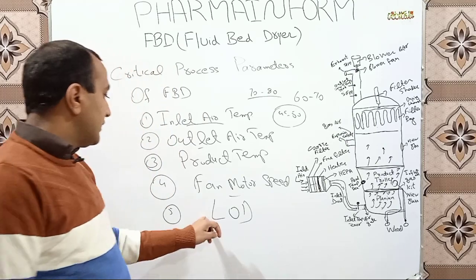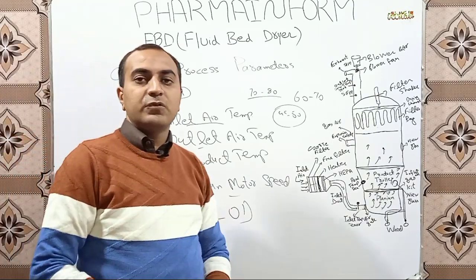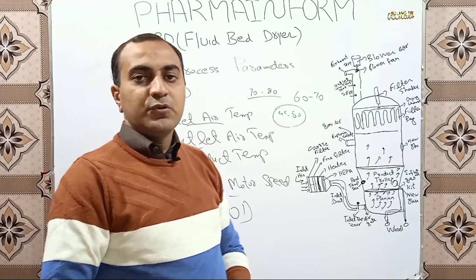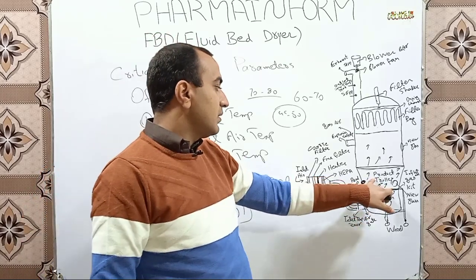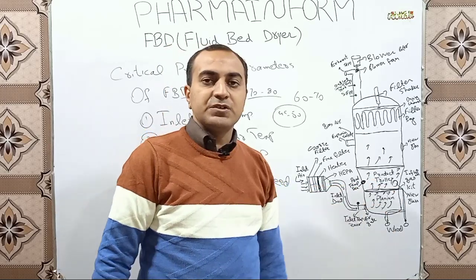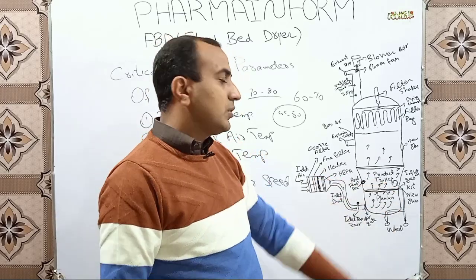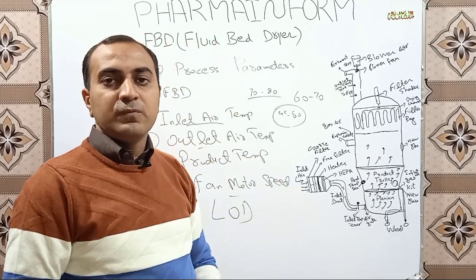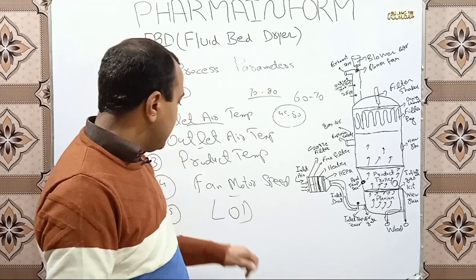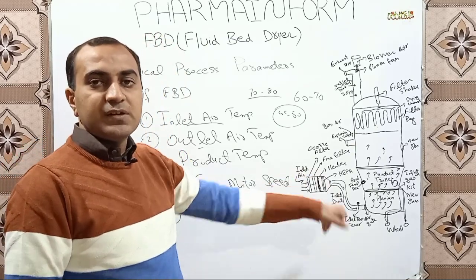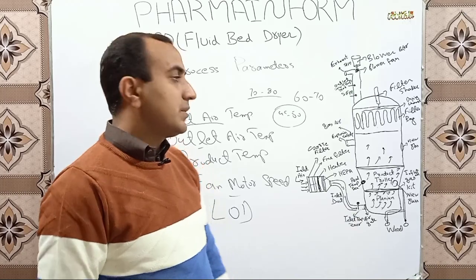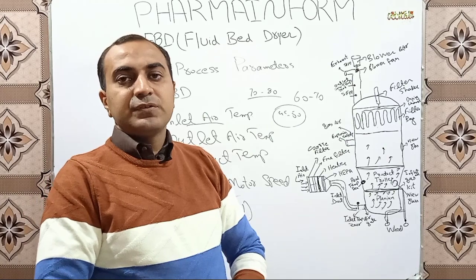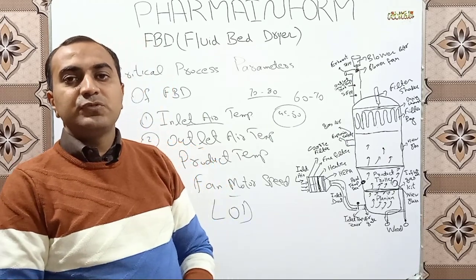The last parameter is LOD, or loss on drying. The completion of the drying cycle depends on the loss on drying. From the sample collection port attached to the product trolley, we take a sample at specific intervals and perform LOD testing on a moisture analyzer. When the LOD comes within the required range, we can confirm that our product is dried. These are the most critical process parameters for products dried using a fluid bed dryer.